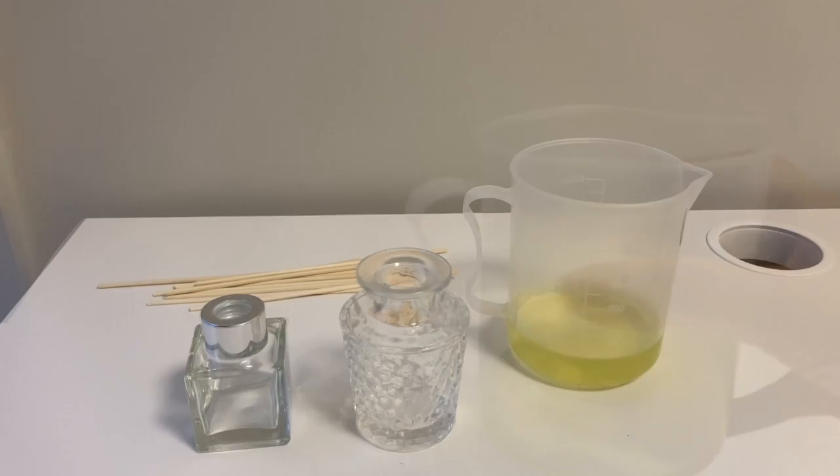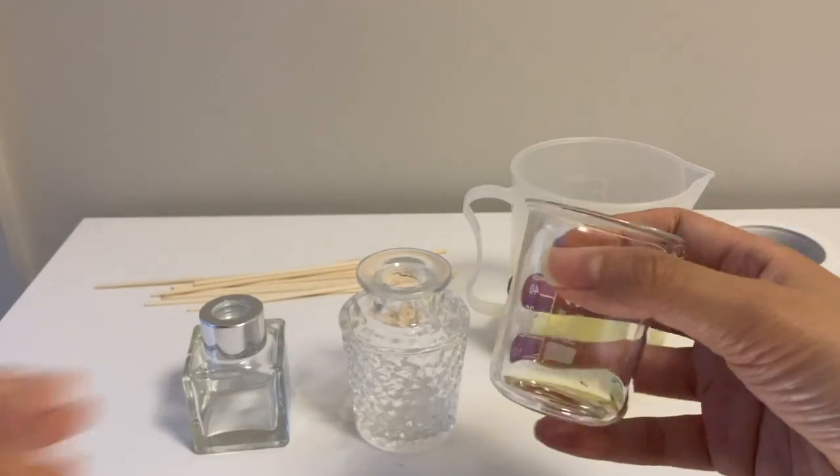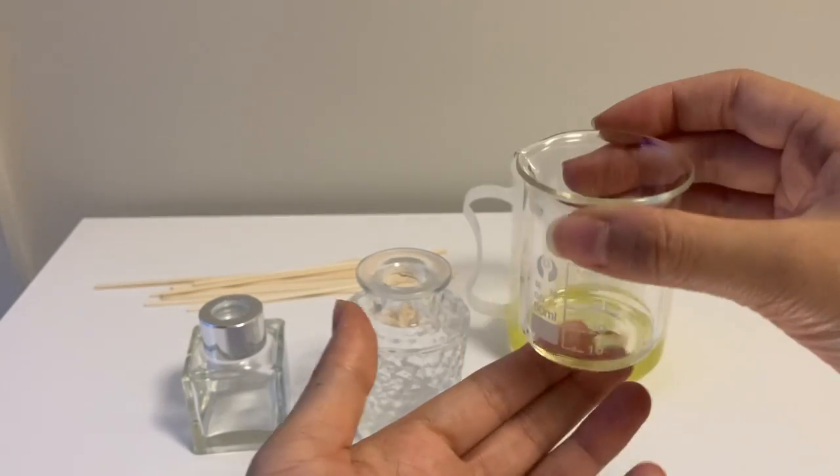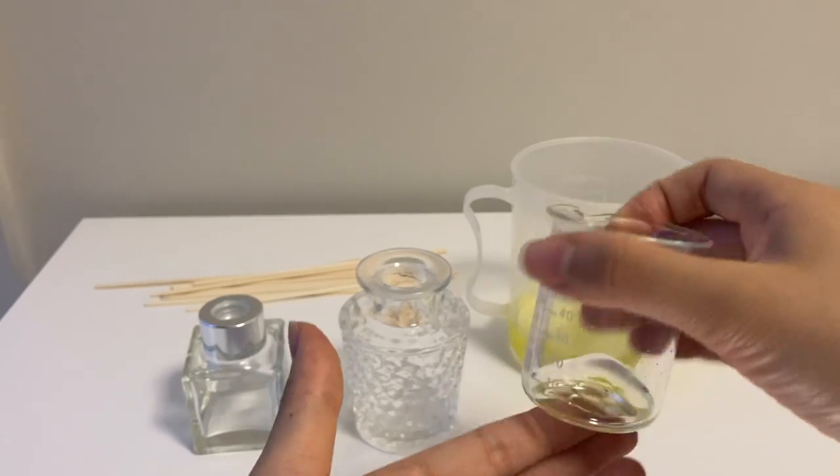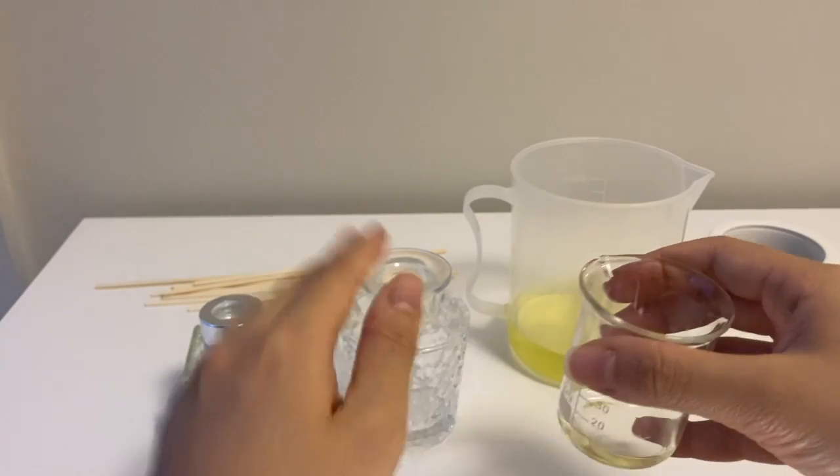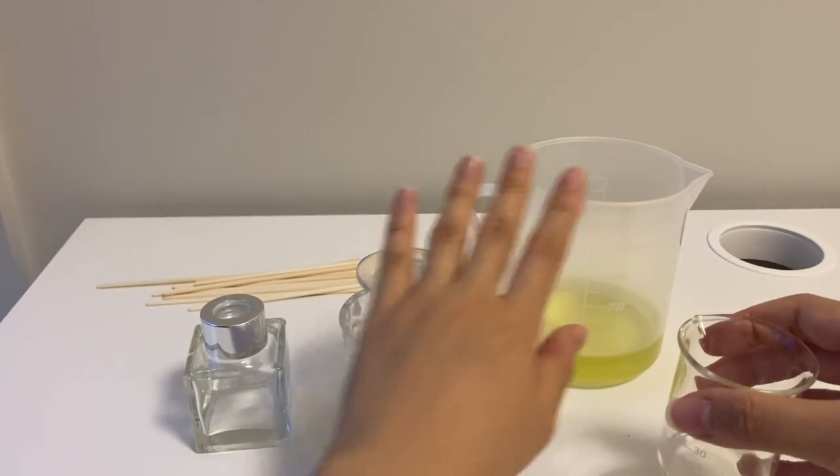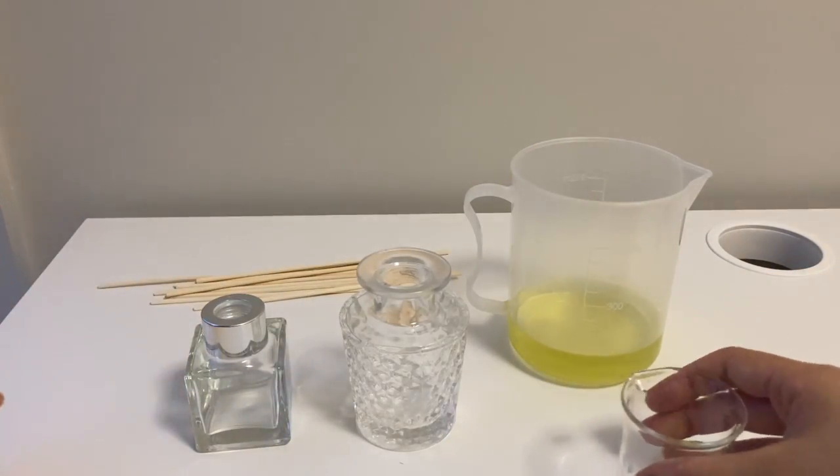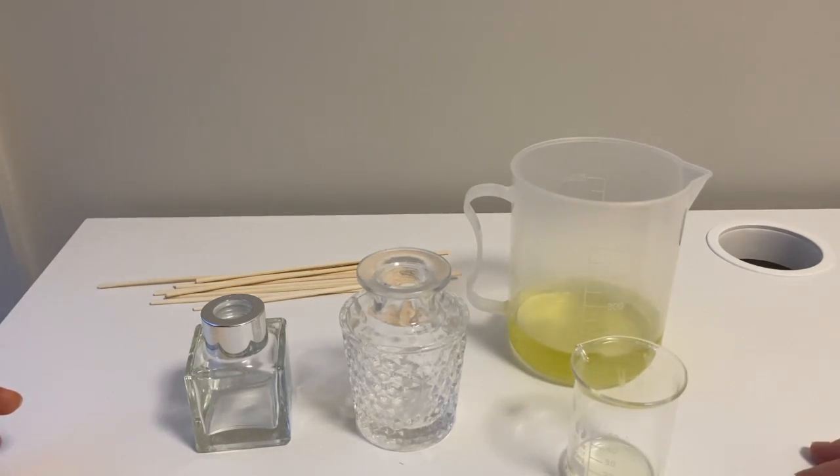The last thing you need is the scent. I have chosen to use essential oils. You can also choose to use fragrance oils of your choice. You can pick your blend accordingly and with this bottle I have planned to place it in the bathroom. So I've used a blend of tea tree, grapefruit and lavender essential oils for a fresh pickup in the bathroom.